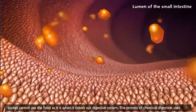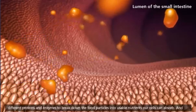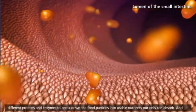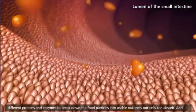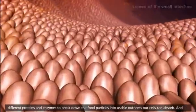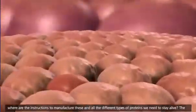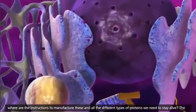The process of chemical digestion uses different proteins and enzymes to break down the food particles into usable nutrients our cells can absorb. Where are the instructions to manufacture these and all the different types of proteins we need to stay alive?